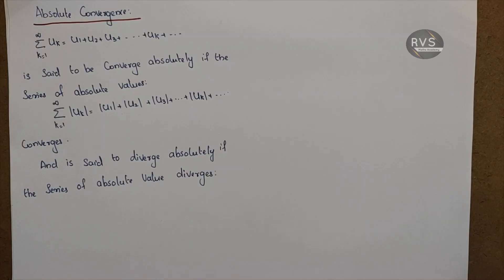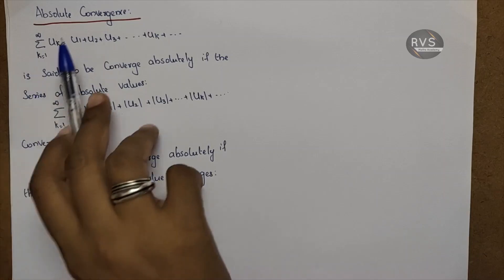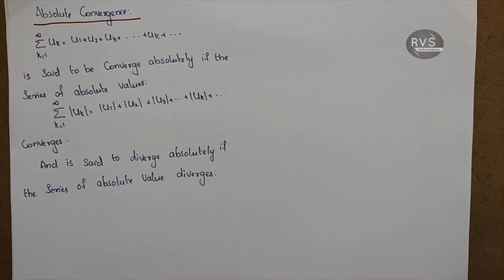What we will learn is that this series has positive terms. We will not consider only positive terms; we will also take the negative terms and see the same dynamic. Then we have a series that is convergent, but it is not absolute convergence.